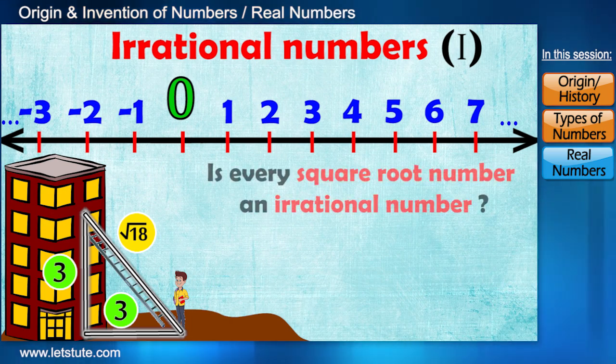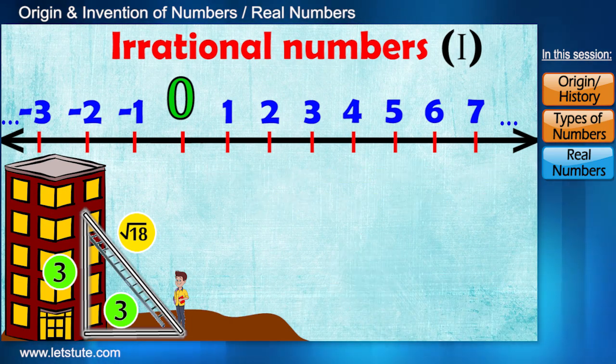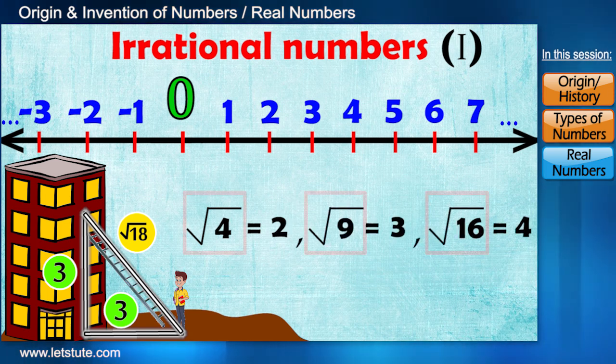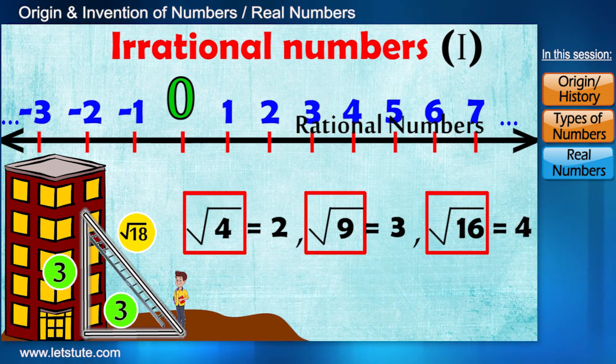So is every square root number an irrational number? No. Root 4, root 9, root 16, they are not irrational numbers. In fact, they are rational.